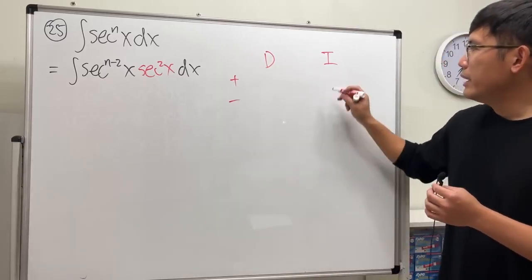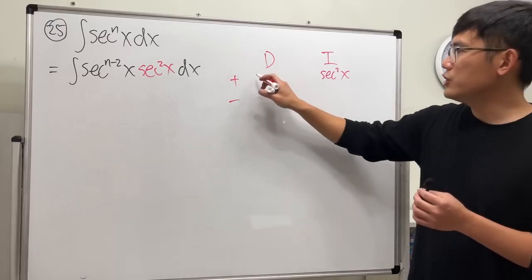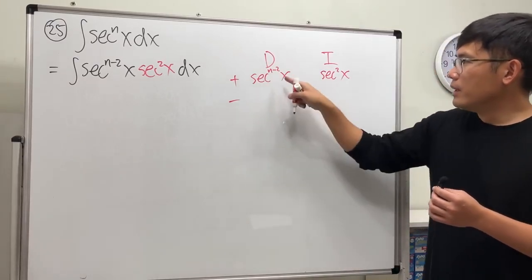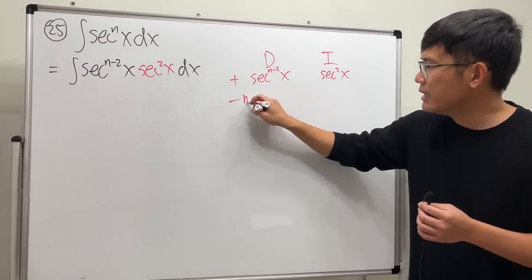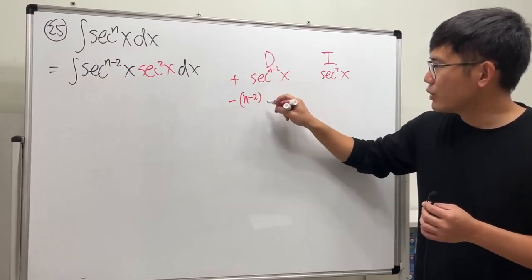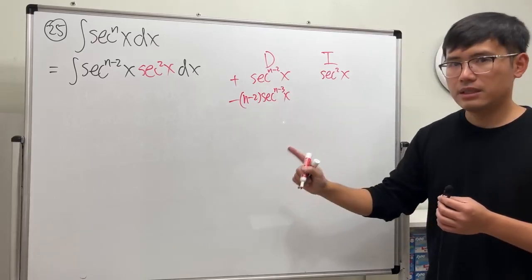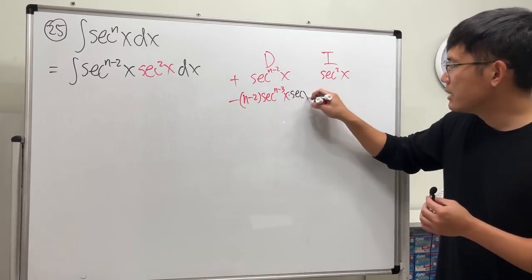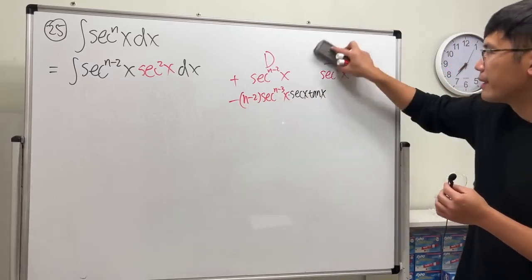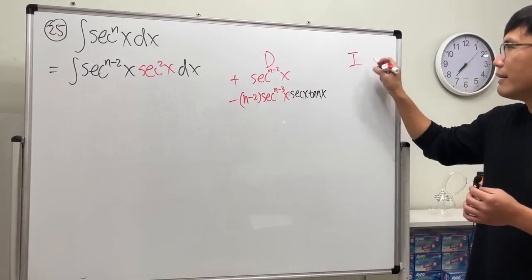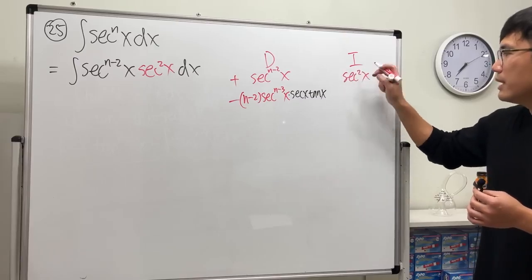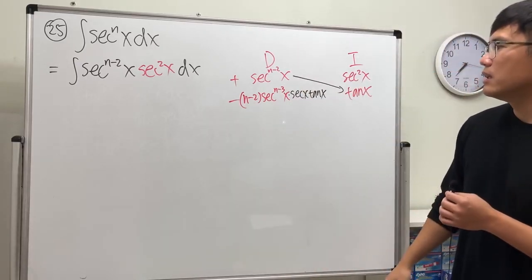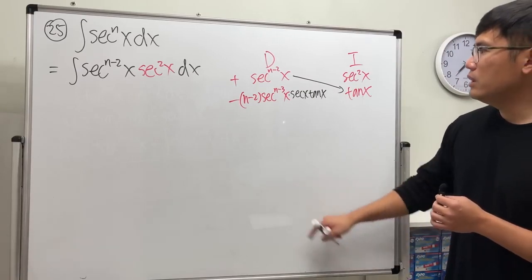We will integrate secant square x and differentiate secant to the n minus 2 power of x. Differentiating, we bring the power to the front: n minus 2, reduce the power by 1 to get secant to the n minus 3 of x, and then multiply by the derivative secant x tangent x by the chain rule. Integrating secant square x gives us tangent x.